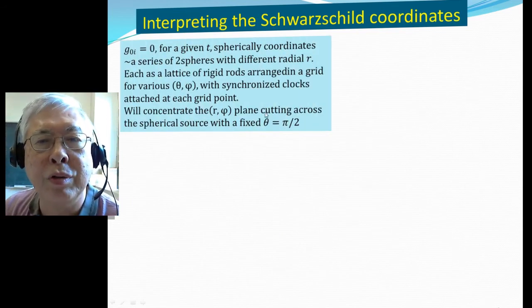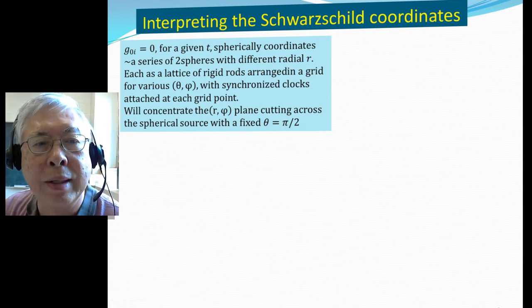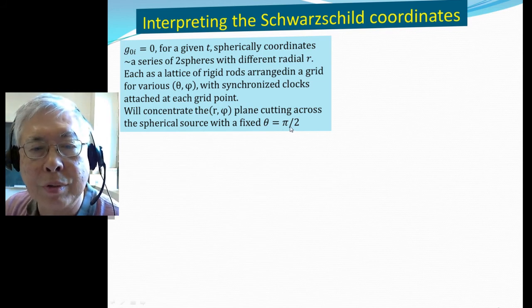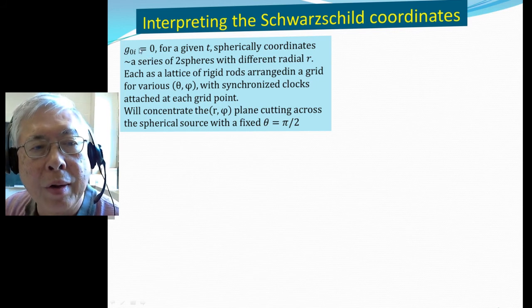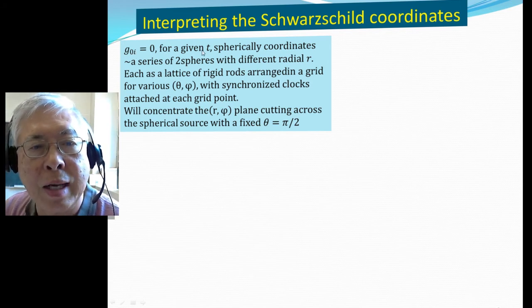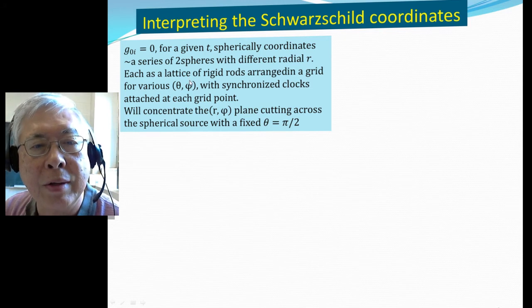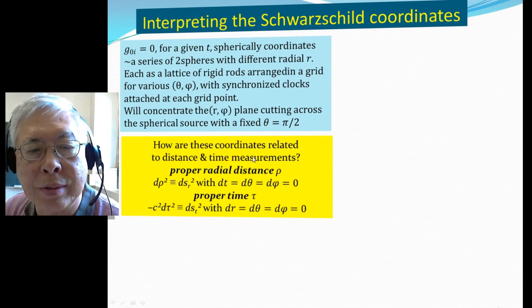We're now talking about how to interpret the Schwarzschild coordinates. We can set up Schwarzschild coordinates. You can take a slice of fixed theta equal to 90 degrees, which means basically cutting across the plane, cutting across the source. For a given time, the various off-diagonal components are zero. We can think of each position in phi-theta as a grid, labeling the vertices by theta and phi value. How are these coordinates related to distance and time measurements?